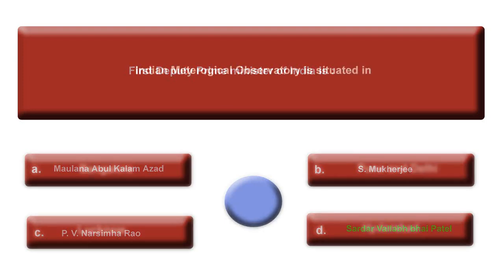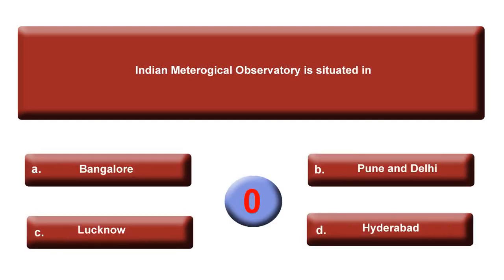Next question: The Indian Meteorological Observatory (IMO) is situated in — and your time starts now. Option A: Bangalore. Option B: Pune or Delhi. Option C: Lucknow. Option D: Hyderabad. Your time is up. The answer is B, Pune.